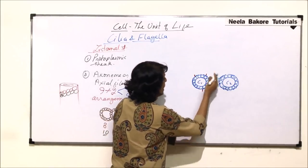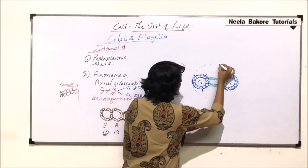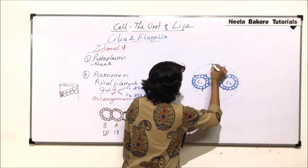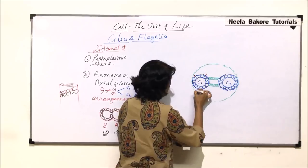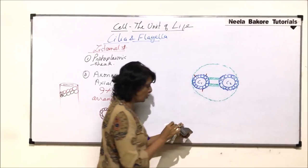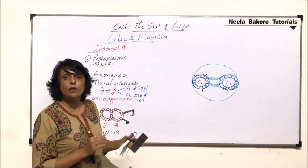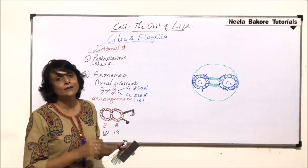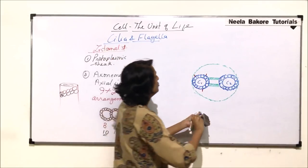The two central microtubules are surrounded by a sheath known as the central sheath. We will label all these parts later once we are done drawing all the structures. Now let us draw the nine peripheral doublets.